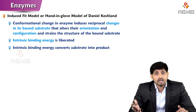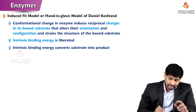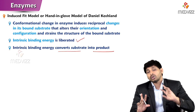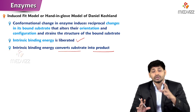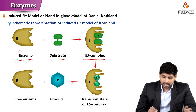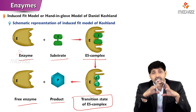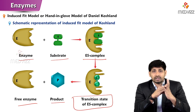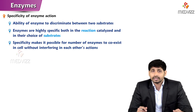The conformational change in the enzyme induces reciprocal changes in the bound substrate, altering its orientation and configuration and straining its structure. Intrinsic binding energy is liberated, and this energy converts the substrate into product. So not only does the active site change conformation, but intrinsic binding energy also drives the conversion. As the enzyme comes near the substrate, it forms the enzyme-substrate complex, causes changes, and finally gives the product and free enzyme — that's all about the mechanism of enzyme action. Thanks for listening.